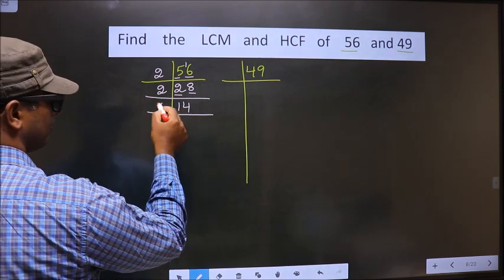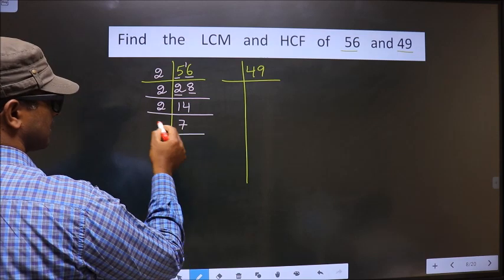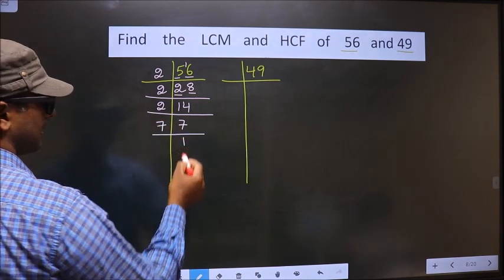Now, here we have 14. 14 is nothing but 2 times 7 is 14. Now, 7 is a prime number, so we take 7 and 1.